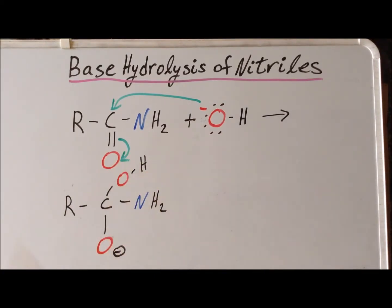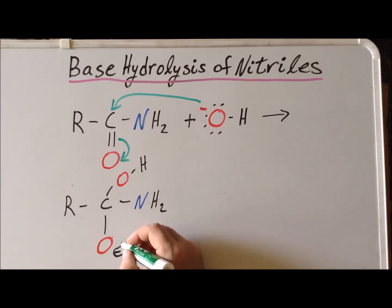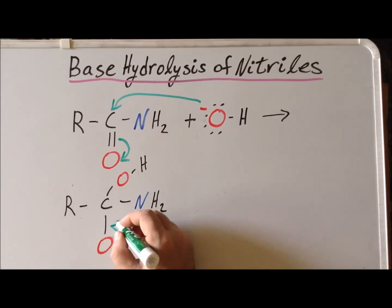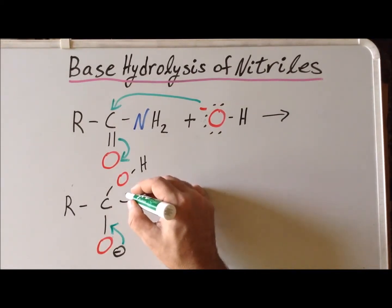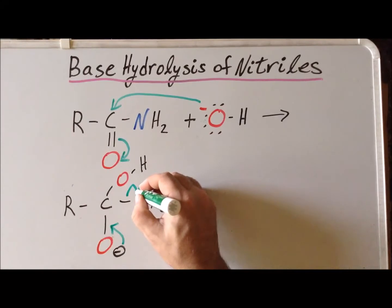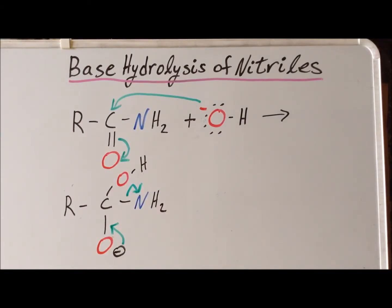This is what we refer to as our second transition state, which we will look at in detail graphically with figures later in the video. After this stage is reached, we have flow of the electron pair to form the double bond, and then rupture of this carbon-nitrogen bond with the electrons going onto nitrogen — forming the amide ion, NH₂⁻.